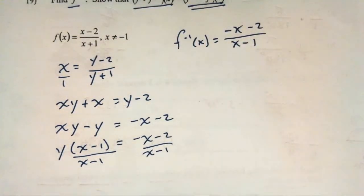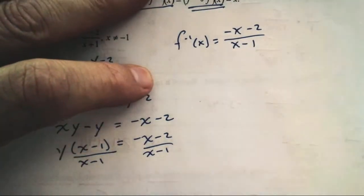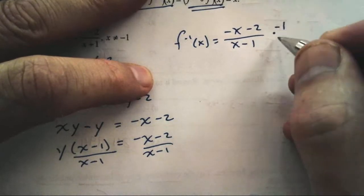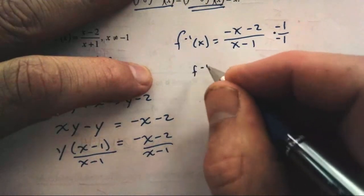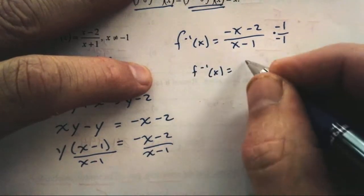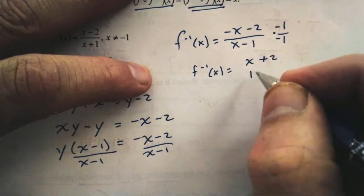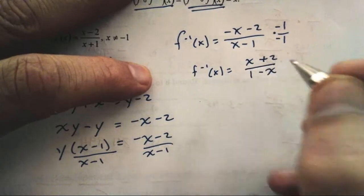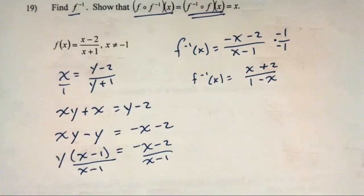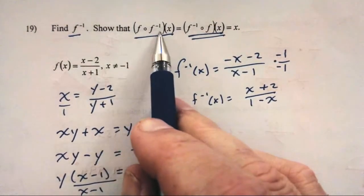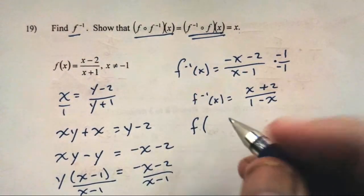That answer is correct, but there's an overload of minuses and negatives. Multiplying by (−1)/(−1), we get f⁻¹(x) = (x+2)/(1−x). Either form is fine; I'll use this one going forward. Now I'm supposed to show that f(f⁻¹(x)) = x.